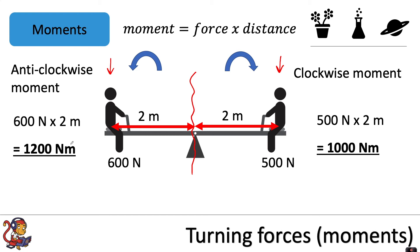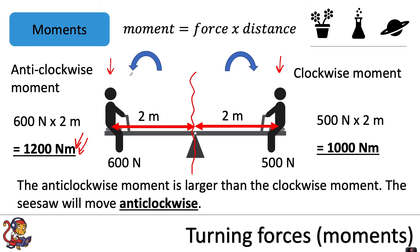As you can see, there is a greater moment, a greater turning effect, on the anti-clockwise side. We can conclude that the anti-clockwise moment is larger than the clockwise moment, and the seesaw will move anti-clockwise. This person will go down, and this person will be lifted up.